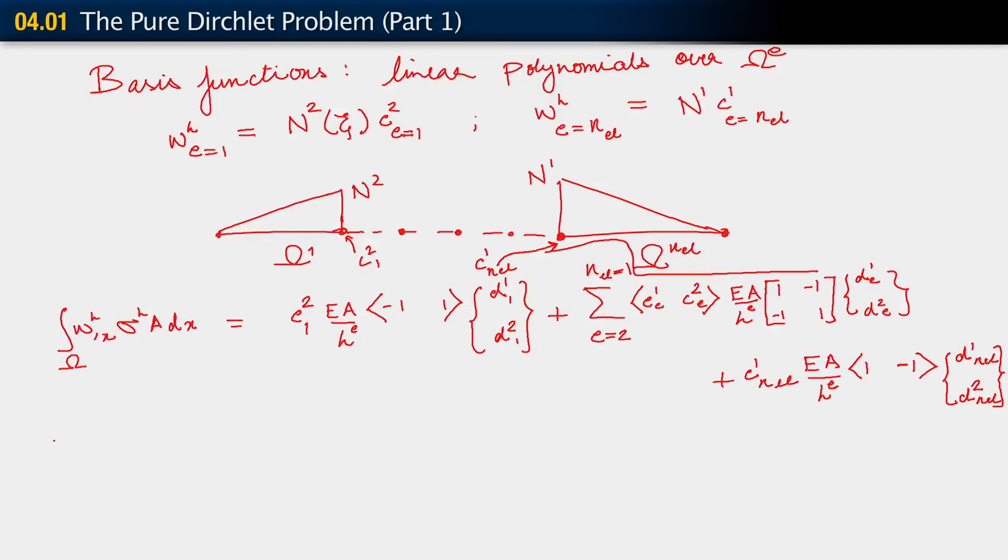And in a related manner, what we will see is that as far as our force contributions are concerned, which come only from our forcing function, there being no traction condition here. Integral over omega W_H F dX equals, so just as before, we will get a contribution c_2^1 F_A h_e over 2. This would be the only contribution from element 1.